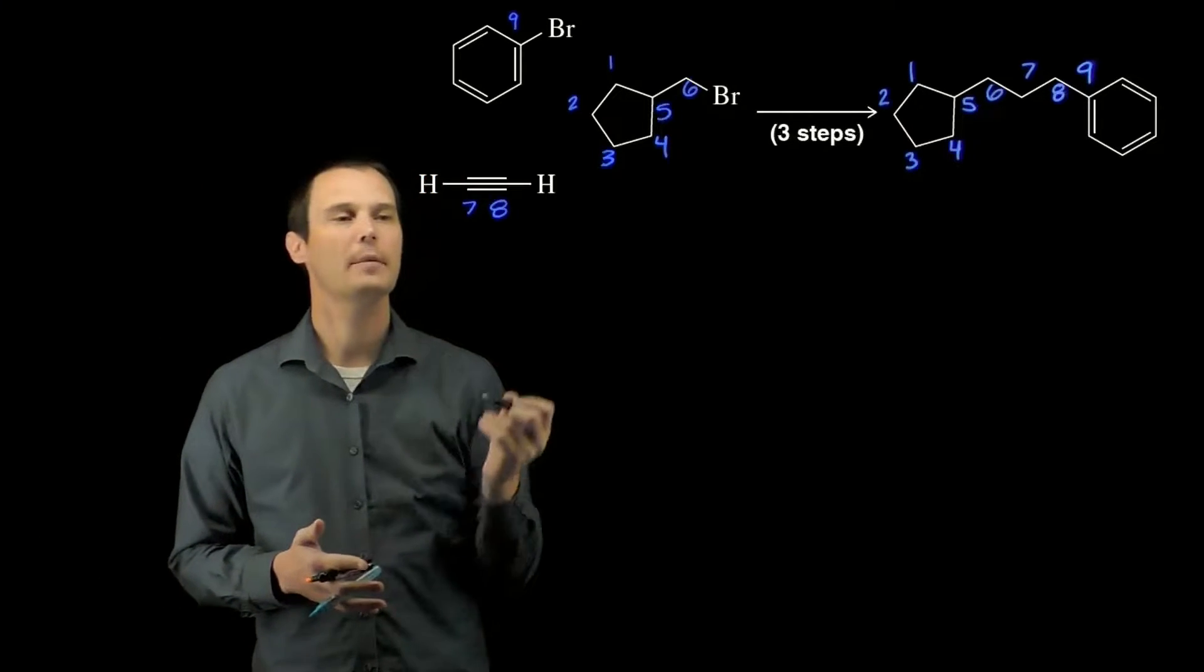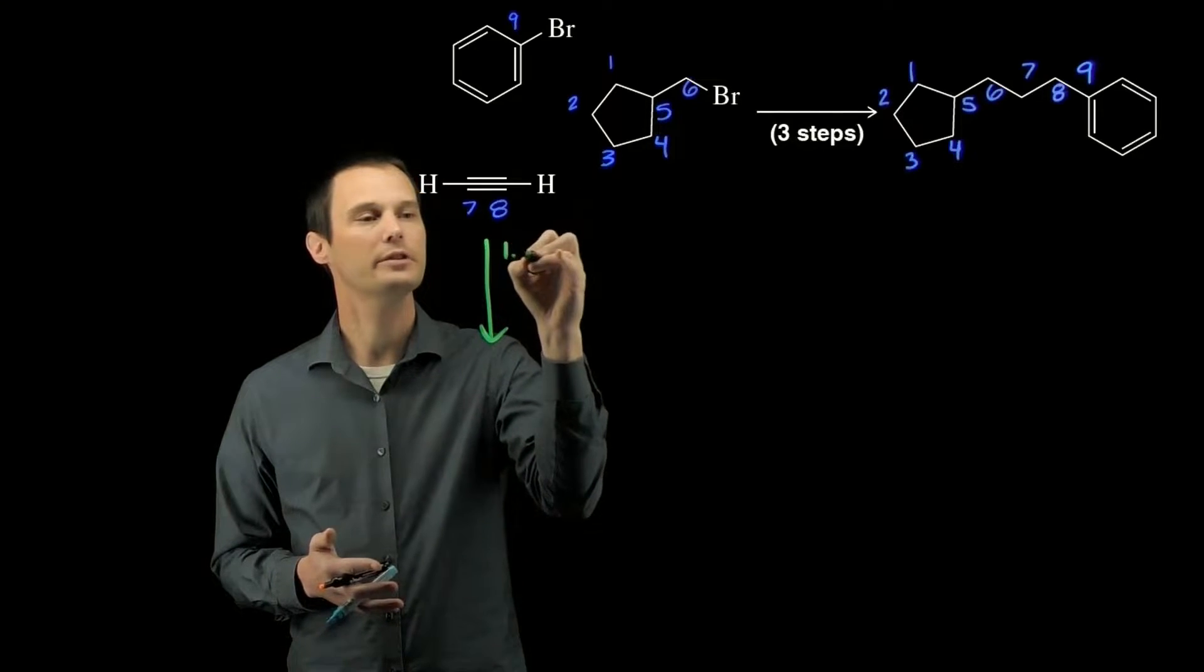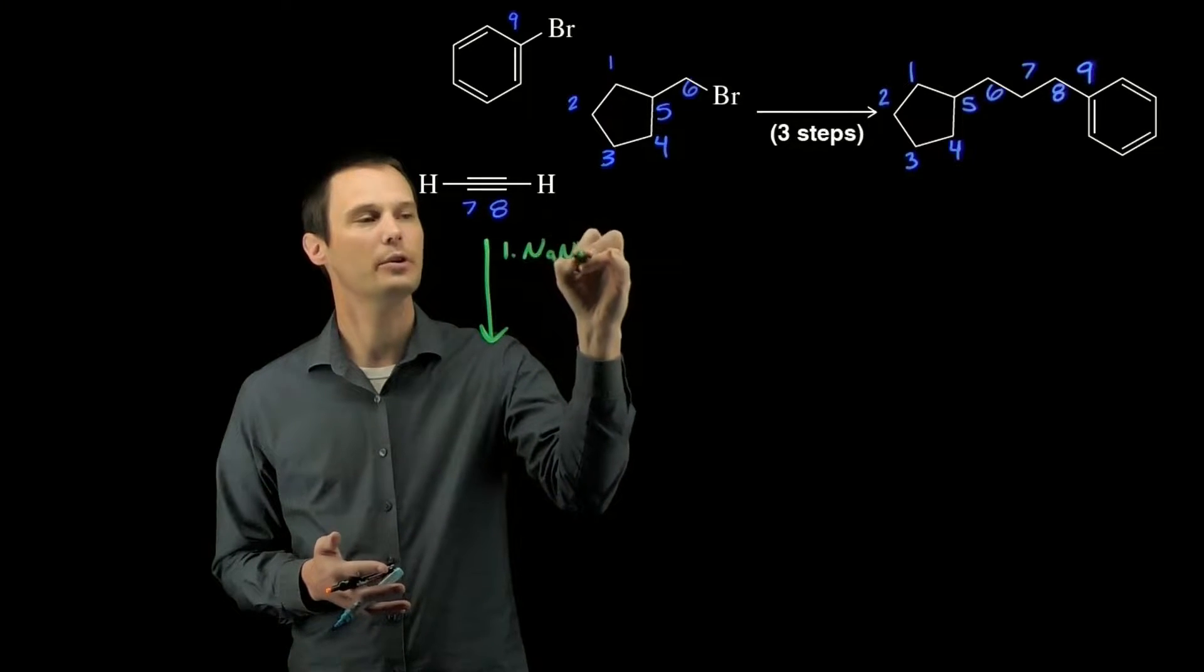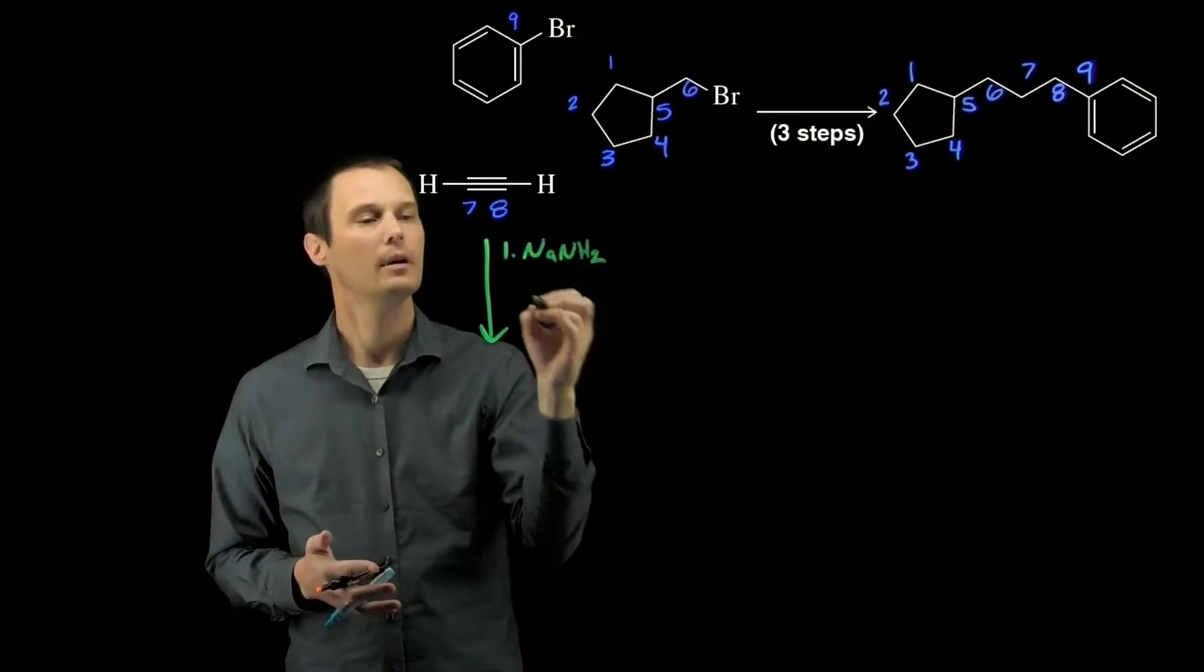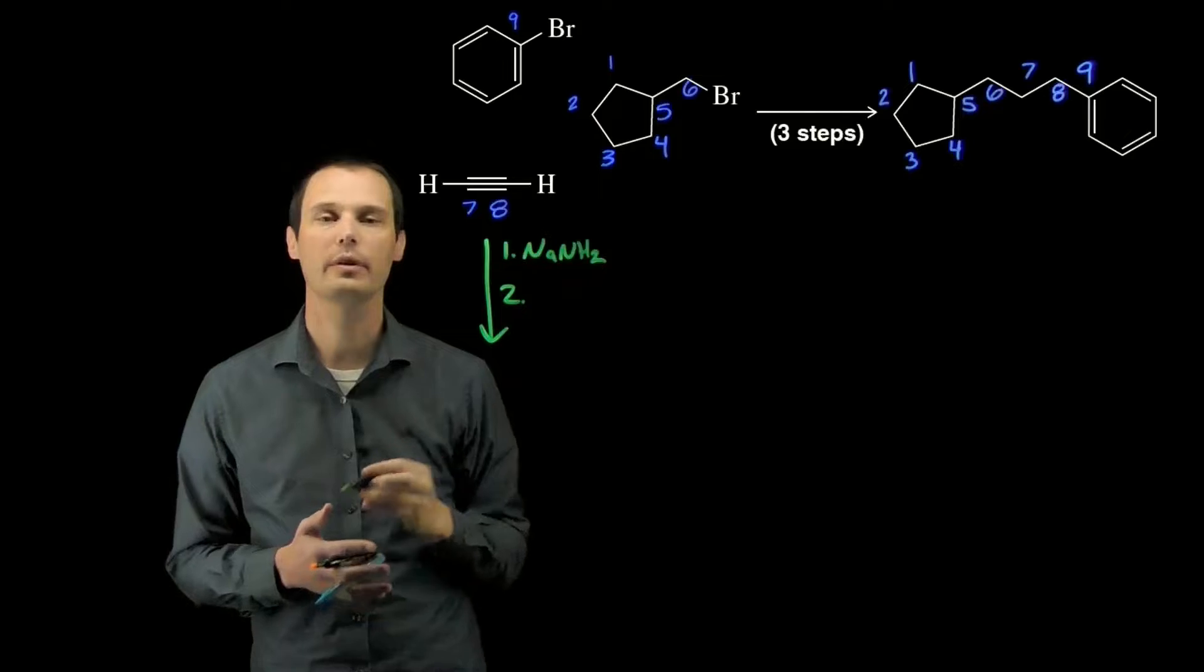So the first step that we will do in this synthesis is to take the alkyne and we'll first deprotonate carbon number seven with sodium amide. And second, we'll use that deprotonated alkyne to do an alkyne alkylation with carbon number six.